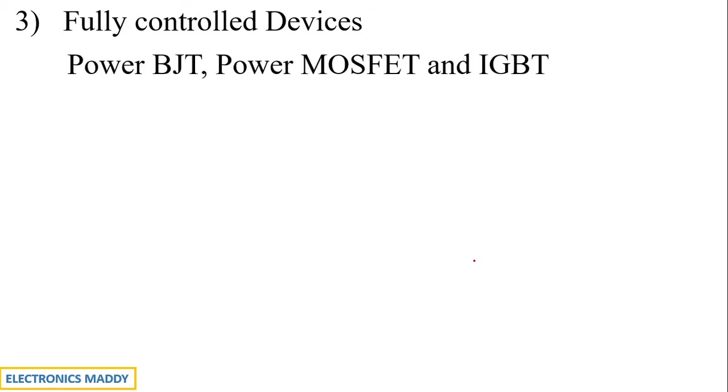The next classification is fully controlled devices. By now you would have already guessed it, but what are the examples of fully controlled devices? Power BJT, Power MOSFET and IGBT.